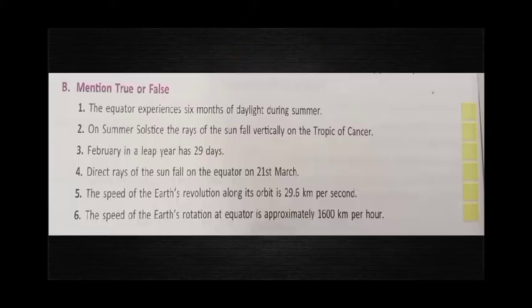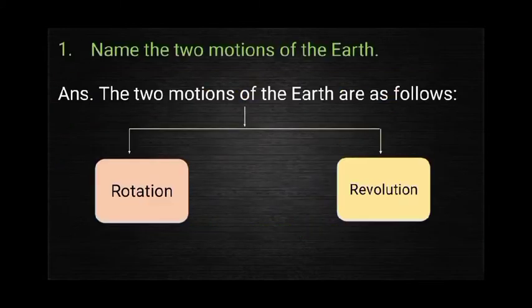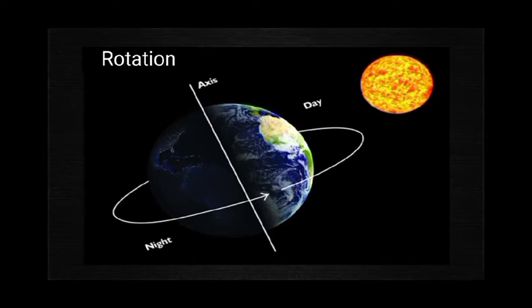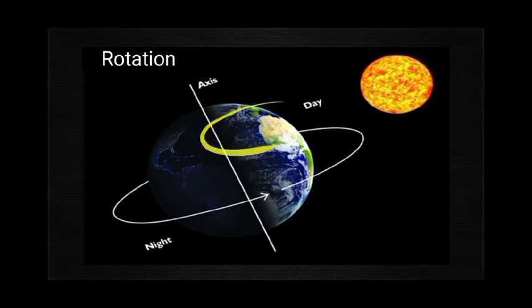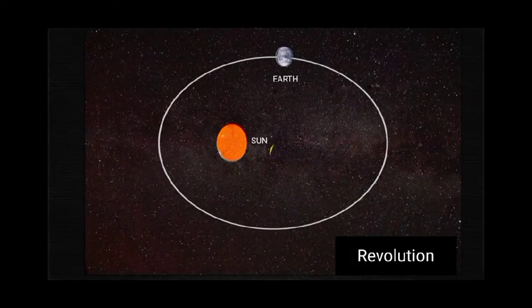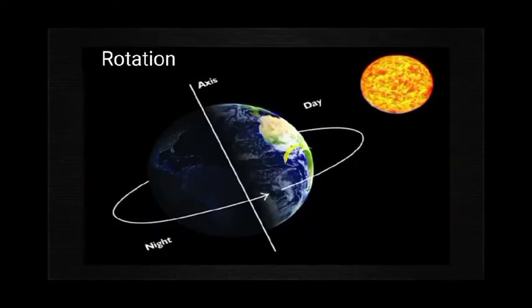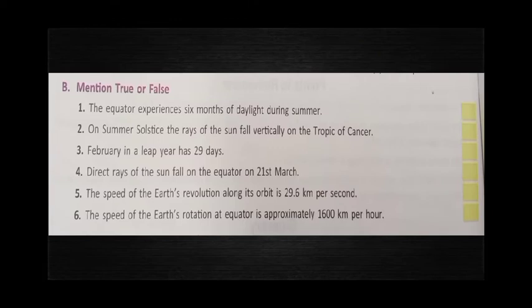True or False: The first question is — the equator experiences 6 months of daylight during summer. The answer is true. This question is asking whether during summer the equator has 6 months of daylight. Looking at the diagram, the equator is in the middle portion. During summer, when the sun's rays fall more on the northern hemisphere's Tropic of Cancer, the equator is the middle part, so 6 months of daylight in summer is true.